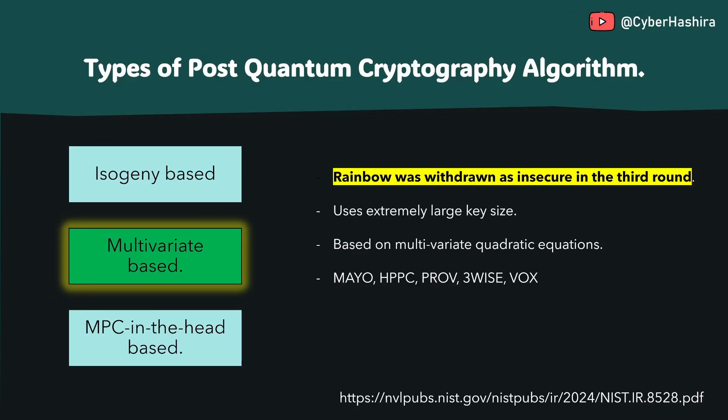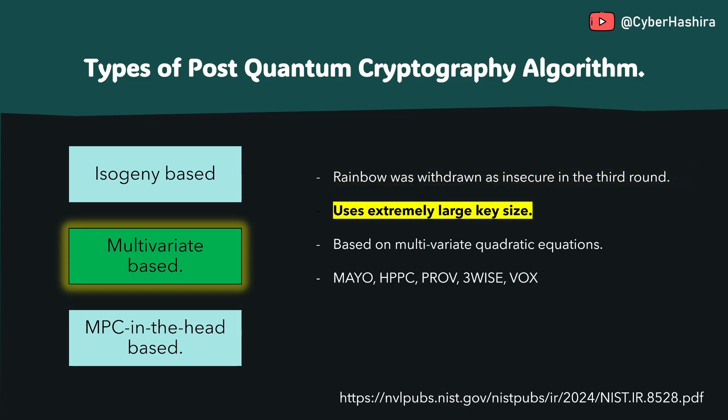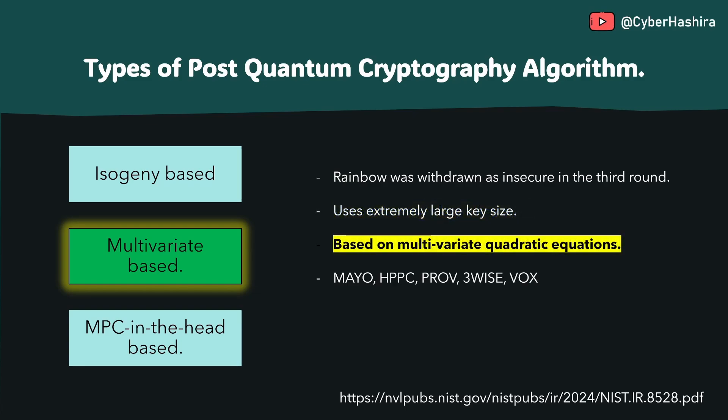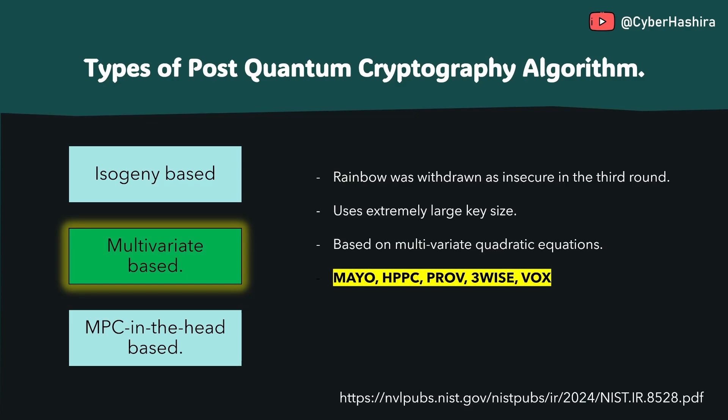Another variant of PQC algorithm is multivariate cryptography. With Rainbow being an example of this type, it was developed for use in digital signatures. Unfortunately, Rainbow was withdrawn from the PQC candidate selection during the third round. A drawback of using multivariate-based algorithms is their extremely large key size. The security of multivariate-based algorithms is based on multivariate quadratic equations. These are some of the multivariate-based algorithms currently being reviewed by NIST under the additional digital signature scheme.